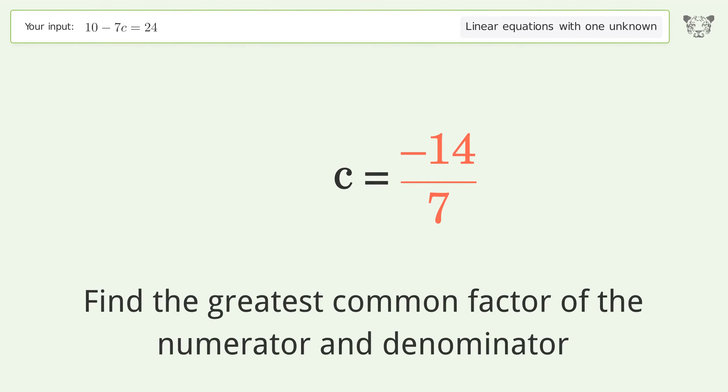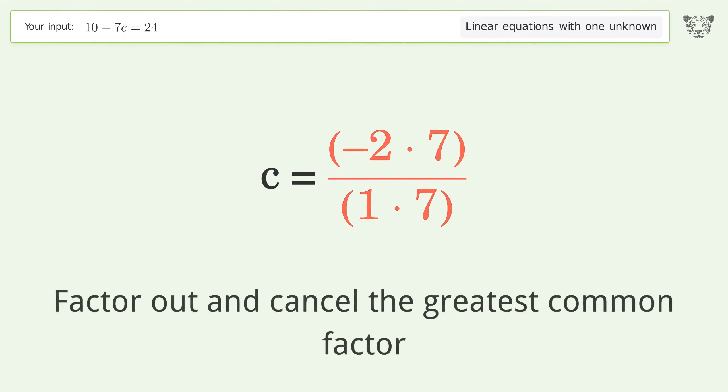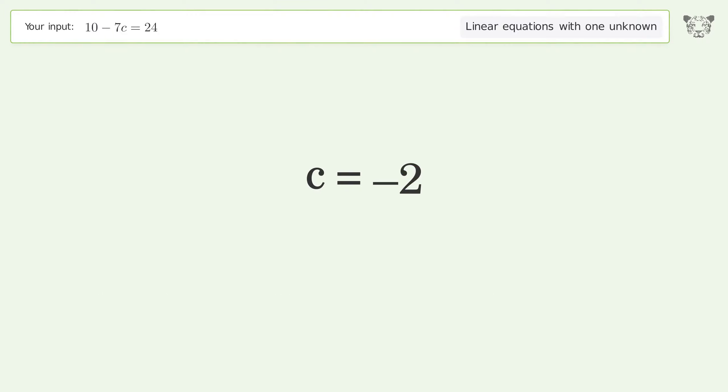Find the greatest common factor of the numerator and denominator. Factor out and cancel the greatest common factor. And so the final result is c equals negative 2.